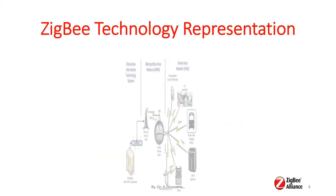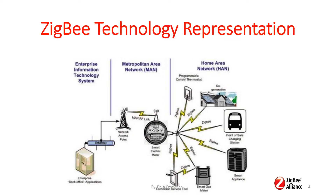In this way also, the Zigbee technology is being represented. In this diagram, we are seeing three segments. The first segment is the Enterprise Information Technology System. The second segment is the Metropolitan Area Network. The third segment is the Home Area Network. The Enterprise IT System and Metropolitan Area Network are connected through Ethernet. In the Metropolitan Area Network, we have a network access point connected via radio frequency link to a smart electric meter. From the smart electric meter, connections go to the Home Area Network, where Zigbee technology is adapted.